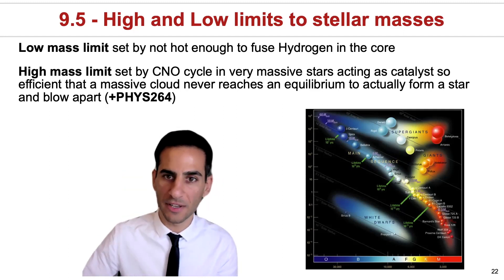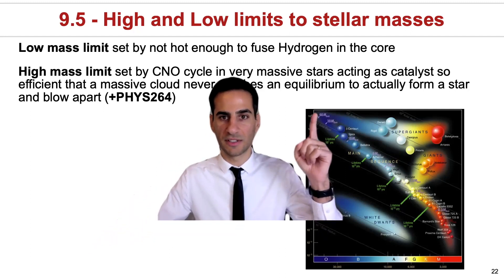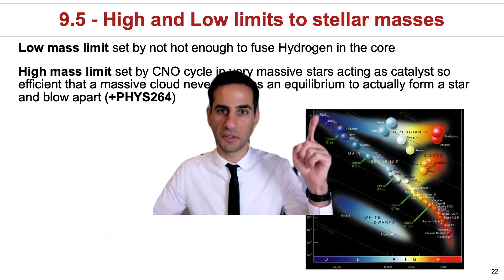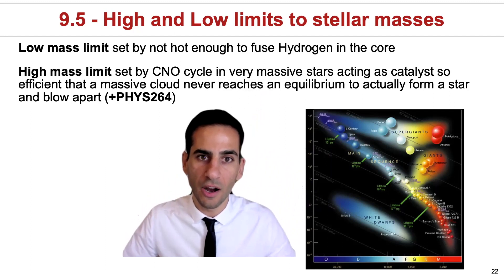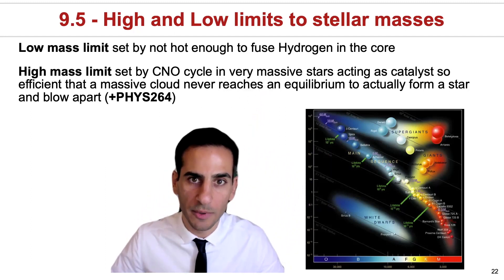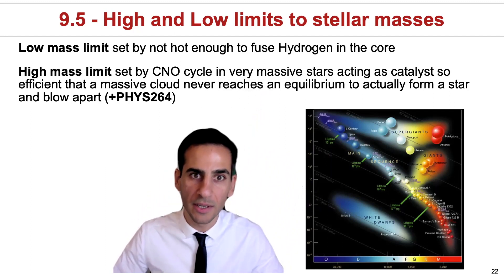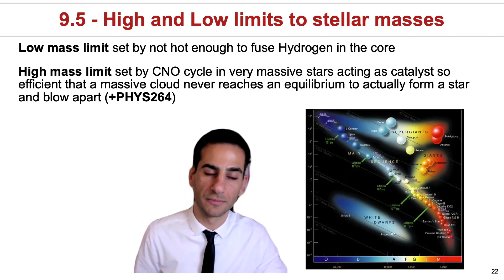While for high mass stars, and you can see them essentially going here, something around 100 solar masses or more, they're very hard to actually form and maintain because of the way they produce energy.